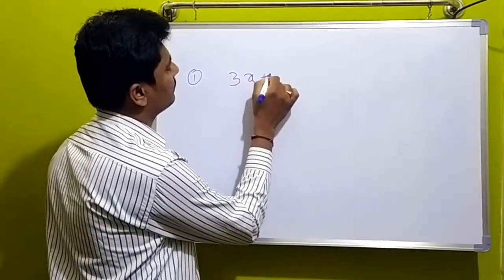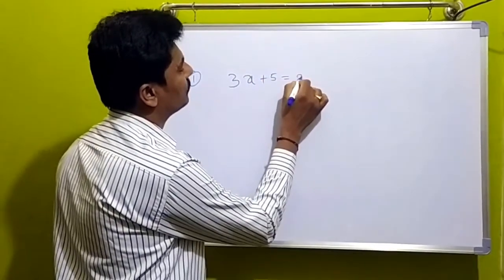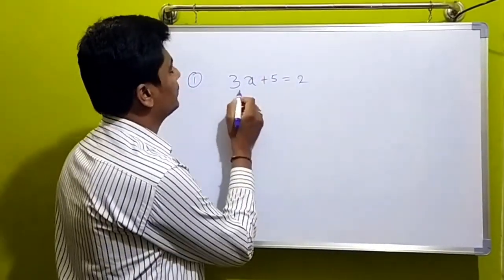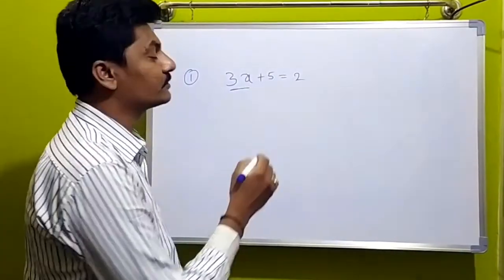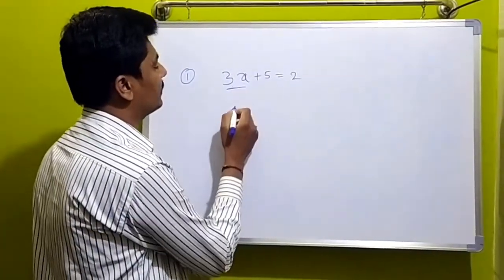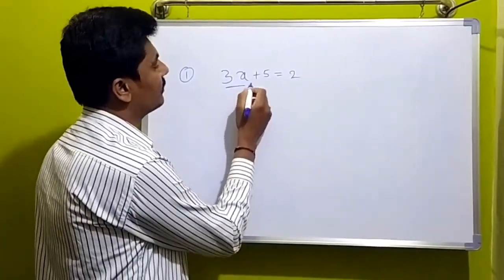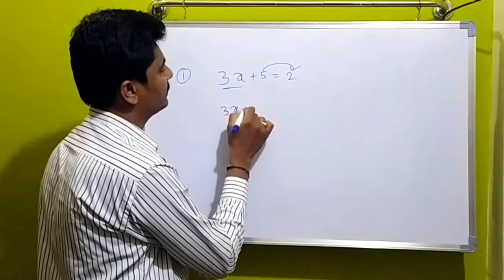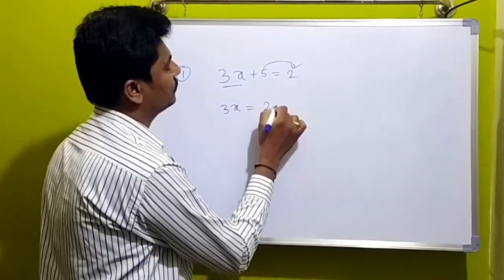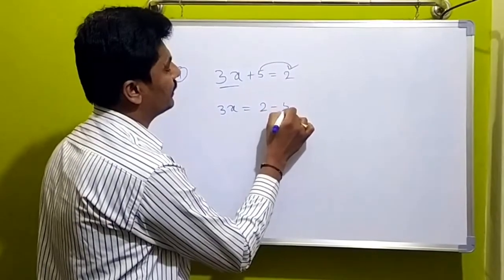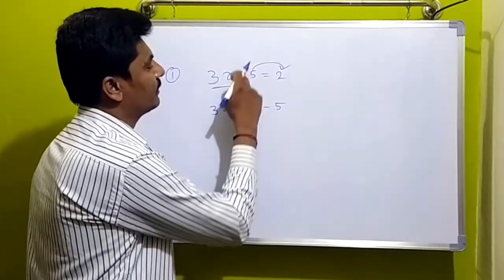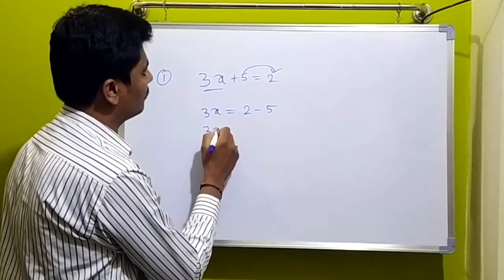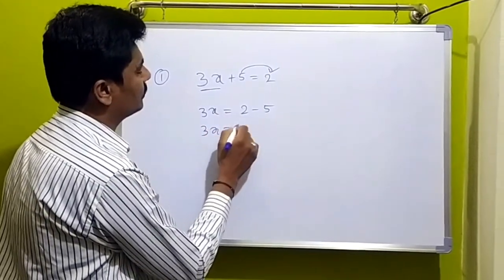One example of this: 3x plus 5 is equal to 2. So, 3x is equal to 2 minus 5.